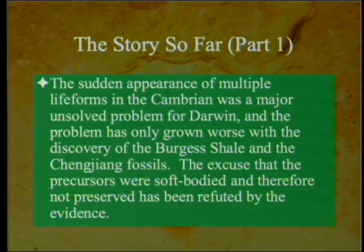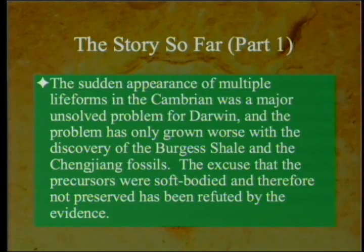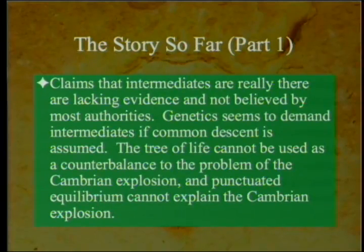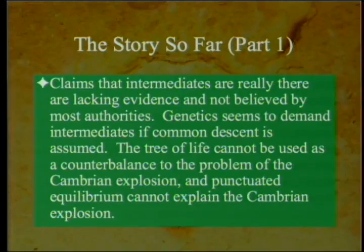The story so far: Meyer has argued, and I think coherently, that the sudden appearance of multiple life forms in the Cambrian was a major unsolved problem for Darwin. The problem has only grown worse with the discovery of the Burgess Shale and then the Chengjiang fossils. The excuse that precursors were soft-bodied and therefore not preserved has been refuted. Intermediates are not believed by most authorities, and punctuated equilibrium cannot explain the Cambrian explosion either.